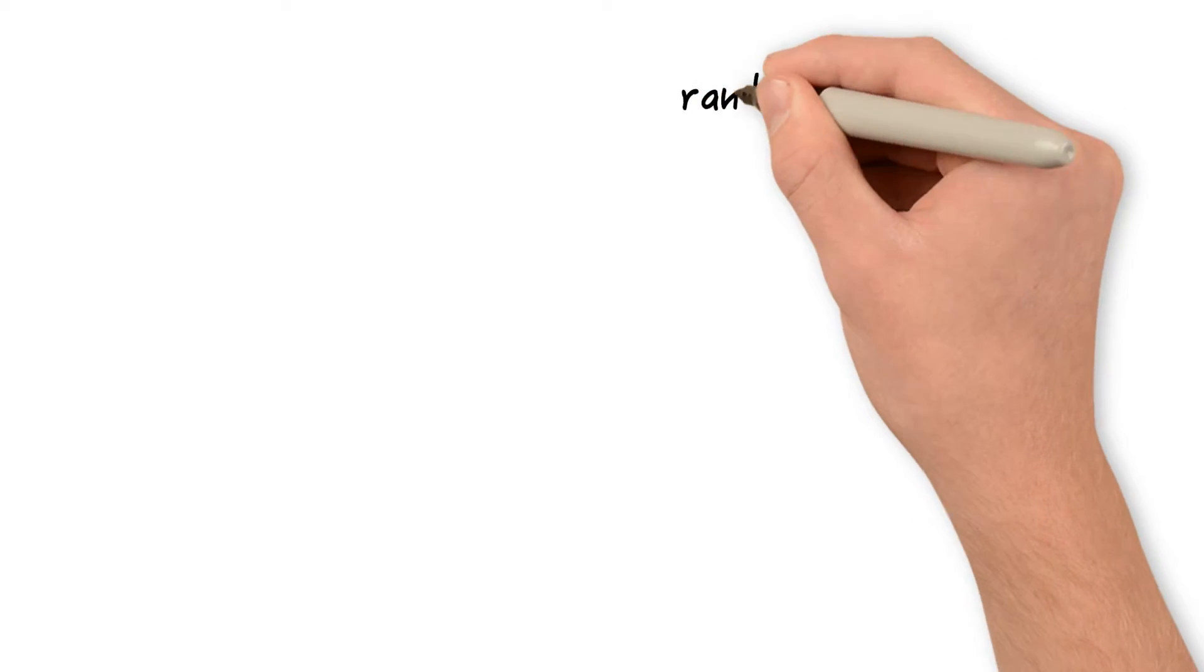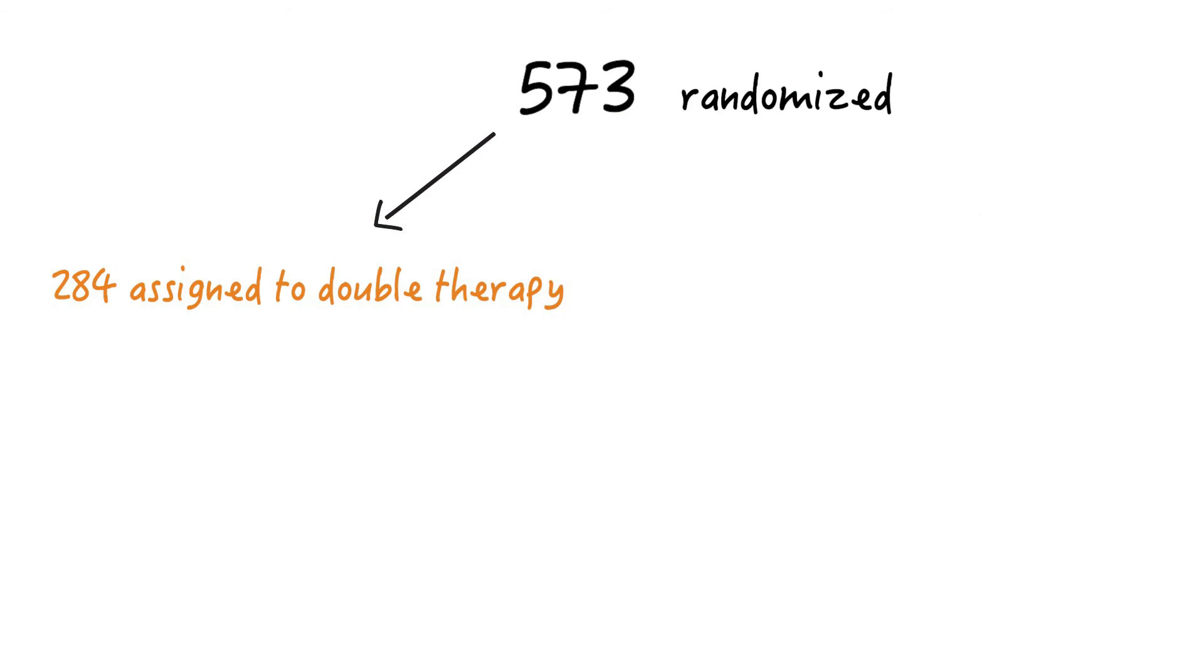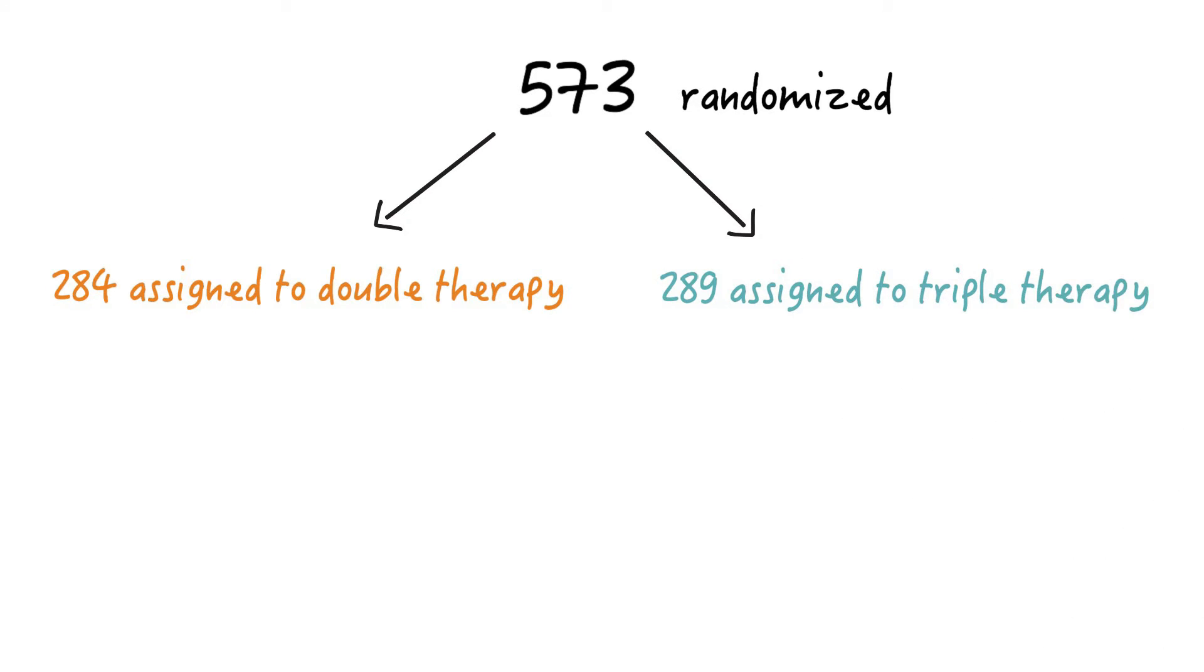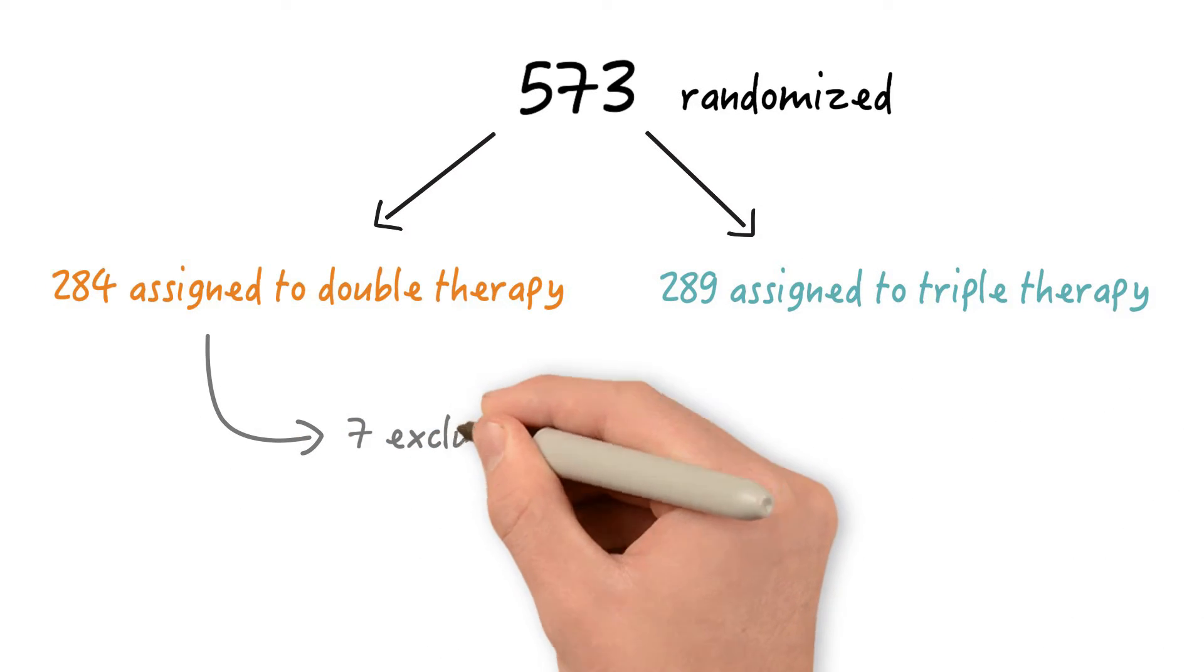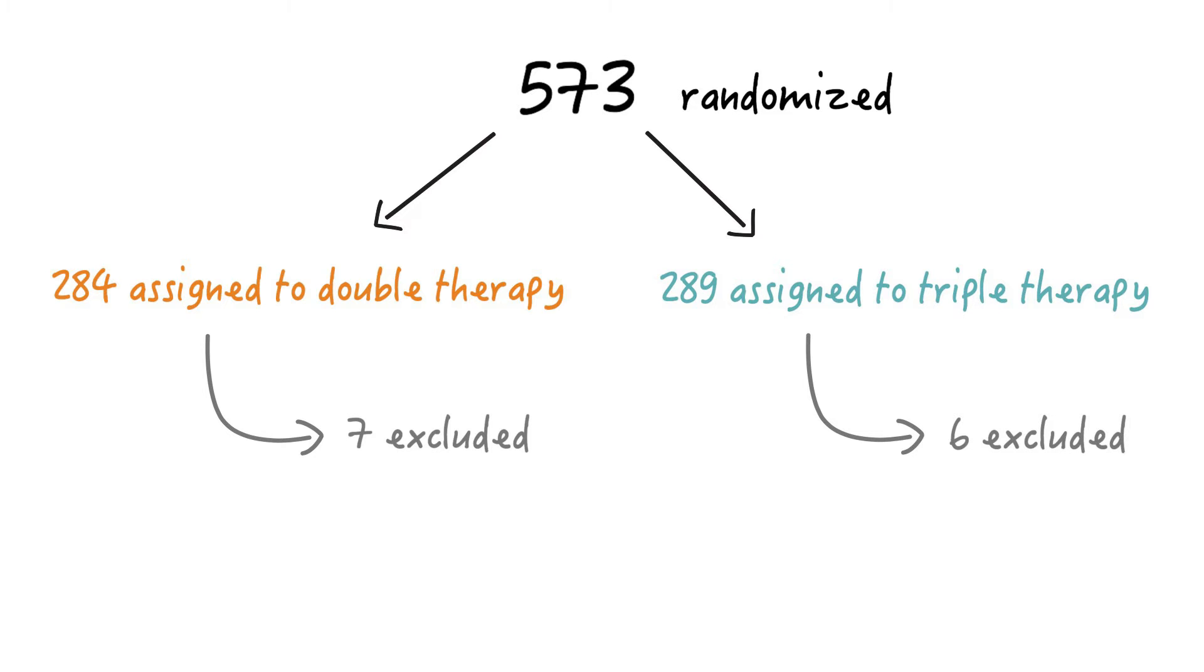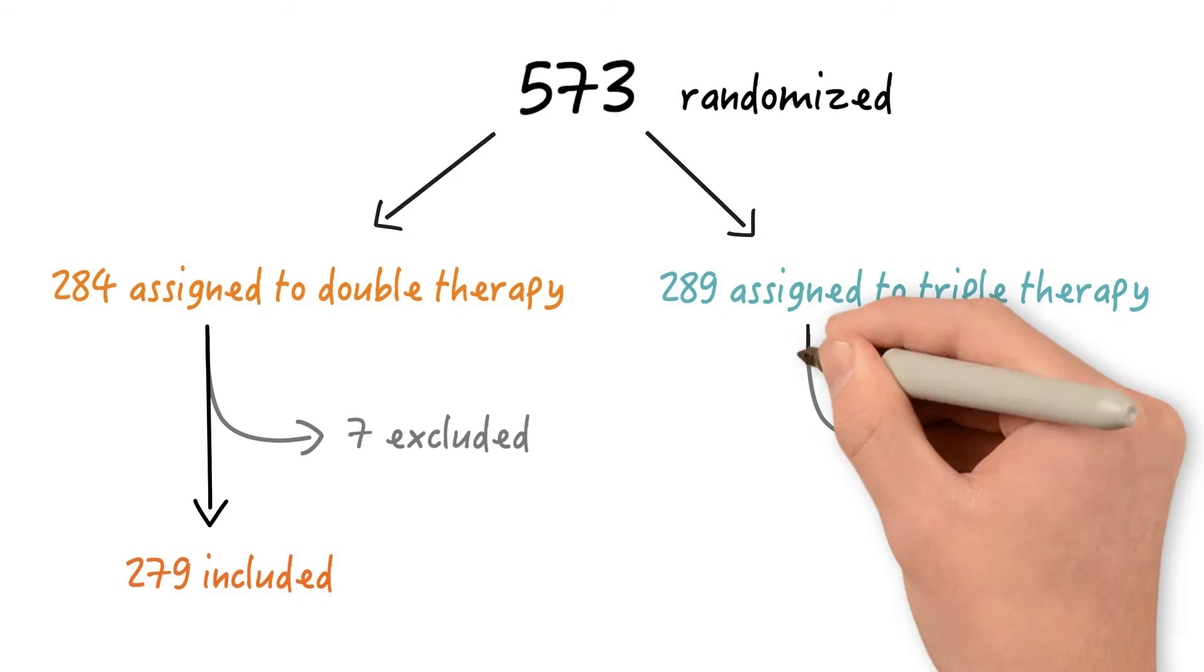DeVilde and co-workers randomized 573 patients. 284 were assigned to the double therapy group and 289 were assigned to the triple therapy group. Seven patients randomized to the double therapy group had to be excluded and six patients in the triple therapy group had to be excluded due to various reasons. So they ended up with 279 patients in the double therapy group and 284 in the triple therapy group.